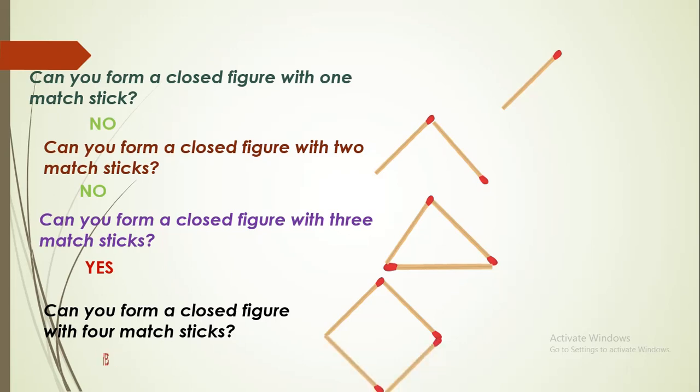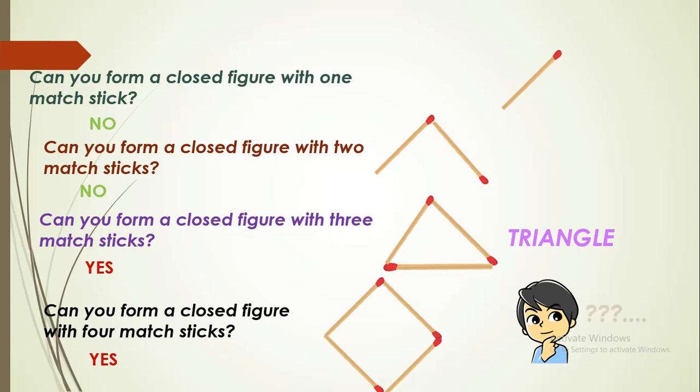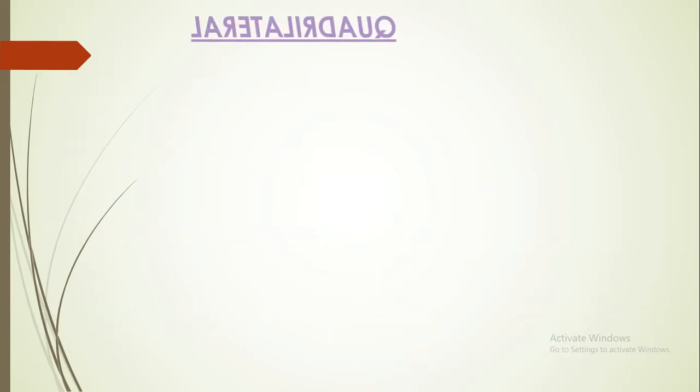We got again a closed figure. So from this activity, it is clear that a closed figure is formed with minimum three line segments. What do we call the polygon closed by three line segments? It is a triangle. Then, what is a polygon formed with four line segments called? It is a quadrilateral.